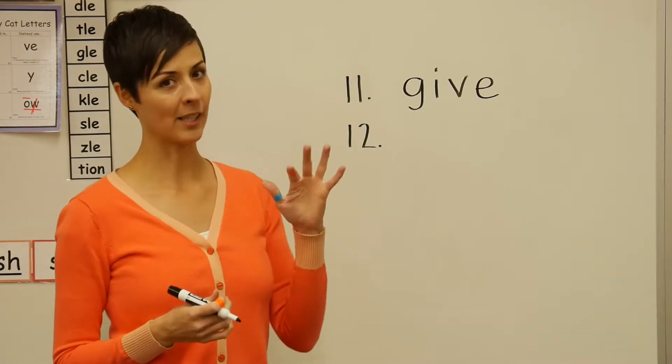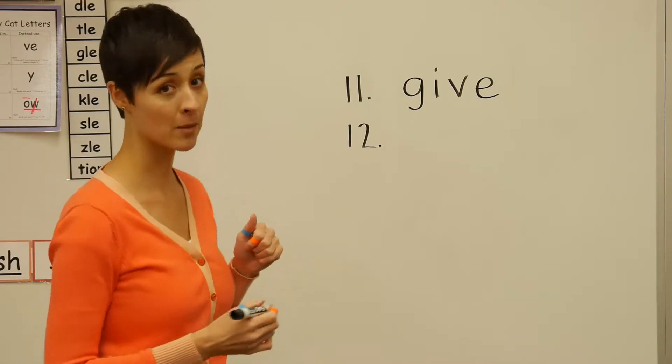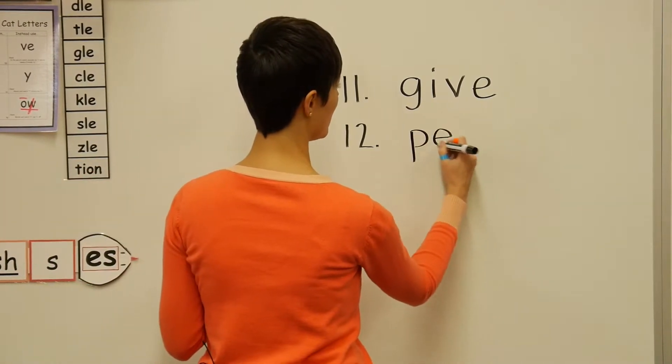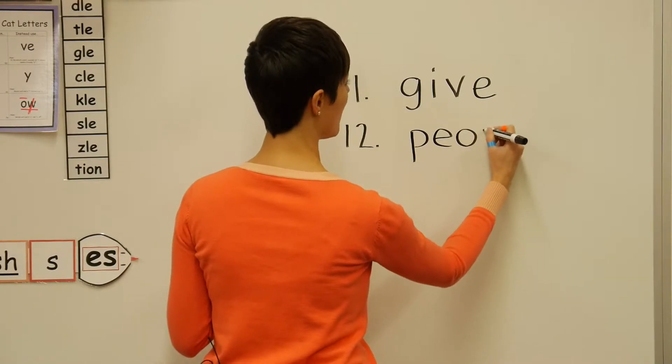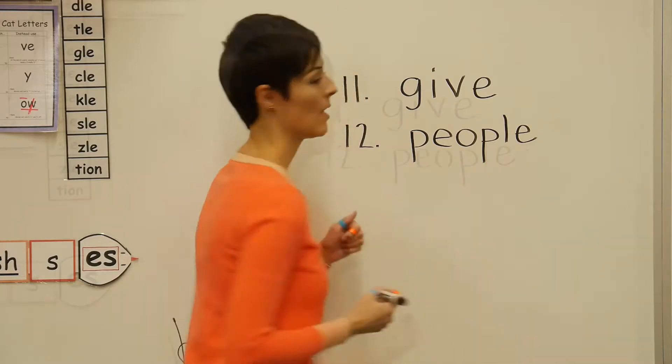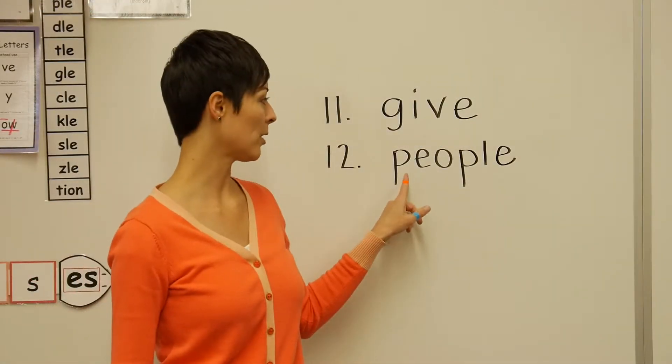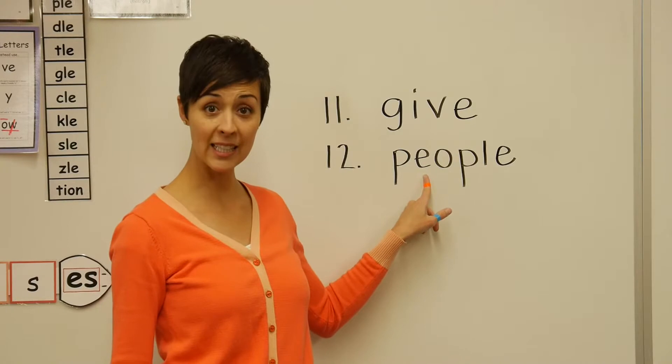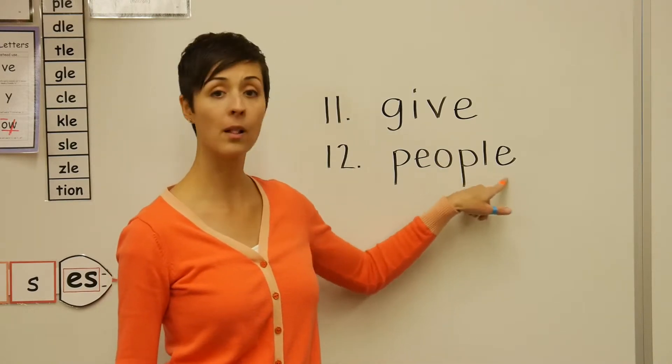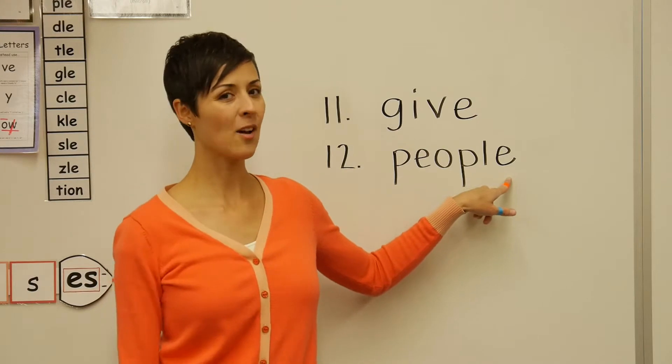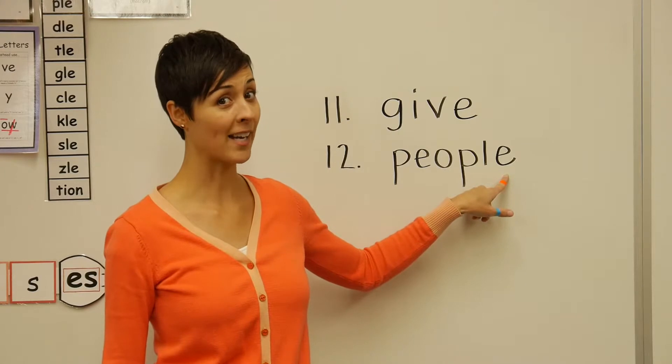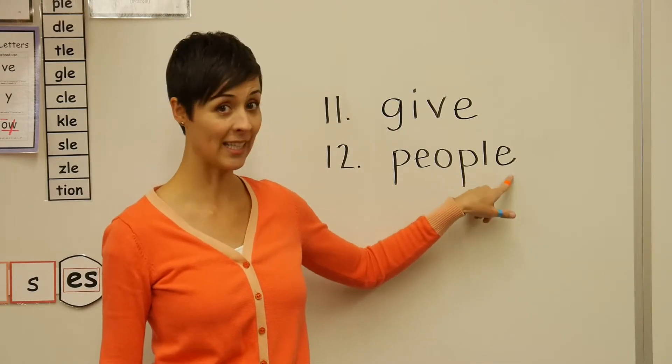People has kind of a funky letter in the middle of it. People is spelled P-E-O-P-L-E. And most first graders have a pretty easy time with the first part P-E and a pretty easy time with the last part P-L-E. Because they know that P-L-E is one of our final syllables. Do you remember?